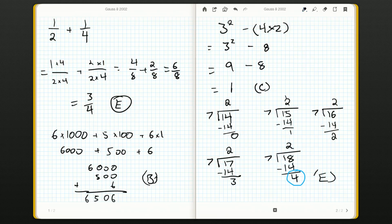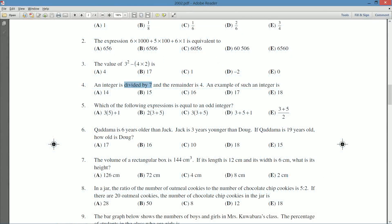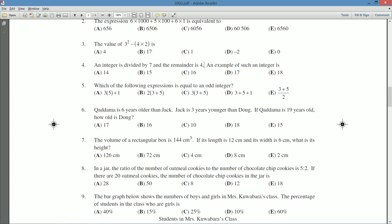So that means E, 18, is an example of a number that when divided by seven gives a remainder of four. Okay? So join me in the next video as we take a look at question number five on this contest. I hope to see you there.